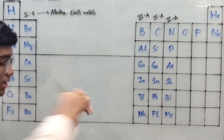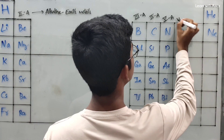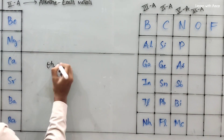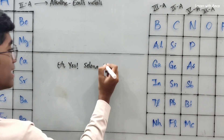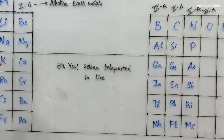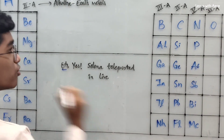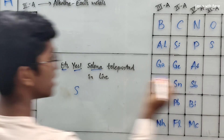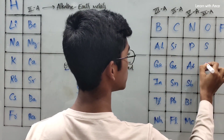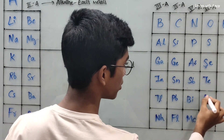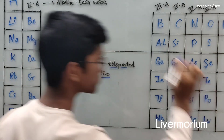Moving on to the oxygen family, which is the 6A group. The sentence is: 'Oh yes, Selena teleported in life.' O for Oxygen, Yes (S) for Sulfur, Selena for Selenium, Tele for Tellurium, Ported for Polonium, and Live for Livermorium. Oh yes, Selena teleported in life — we have completed the oxygen family.